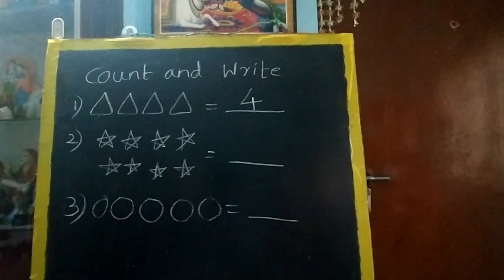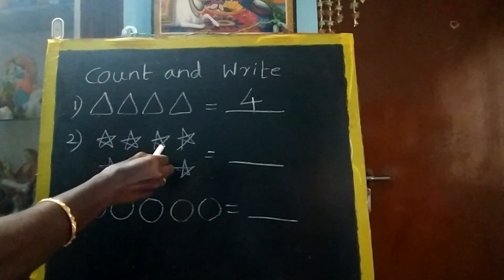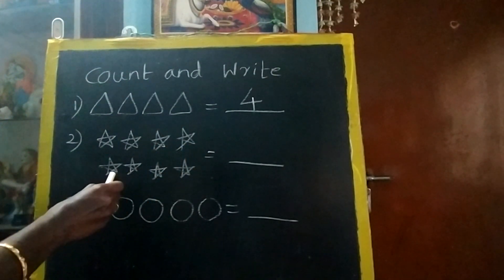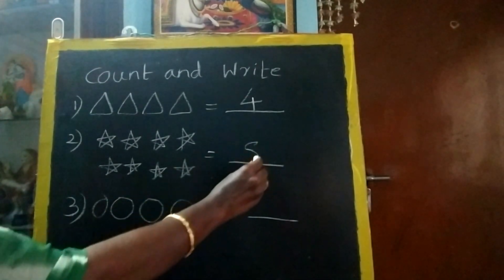So you have to write here 4. Next count the stars. 1, 2, 3, 4, 5, 6, 7, 8. Then you have to write 8 stars.